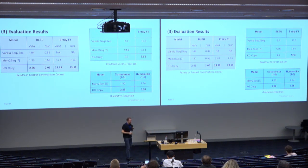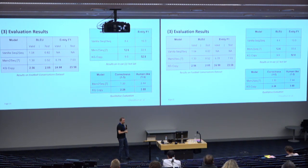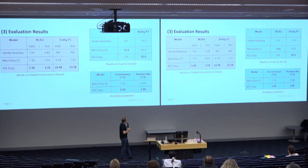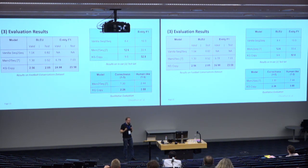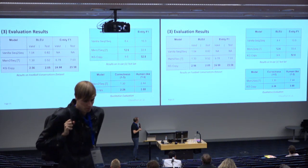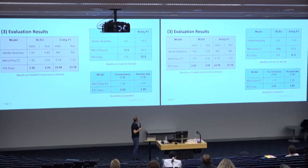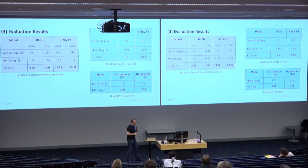Looking at the evaluation results on our football dataset, we used two metrics. The BLEU metric is a statistical metric for word overlap measuring how natural the conversations are — higher is better. We compared against the vanilla sequence-to-sequence model without a knowledge graph, and against previous work mem2seq which doesn't use a gating mechanism. We score higher, meaning conversations are still natural. We also looked at entity F1, which measures how accurately we can answer factual questions. We are much better than previous work, achieving 23.58% F-score on the test set, though it is still not ready for production use — we see it as a first baseline.